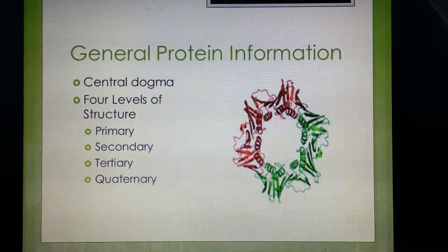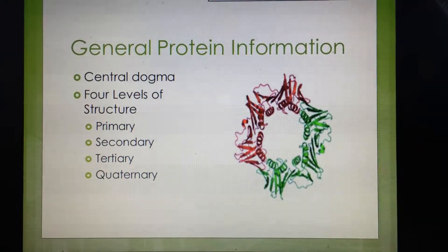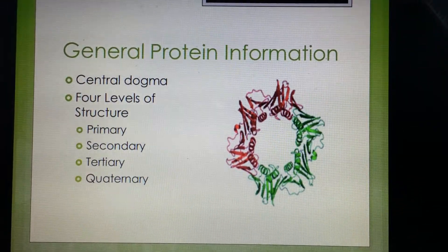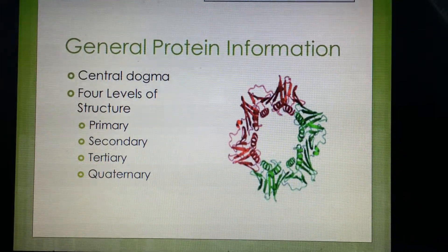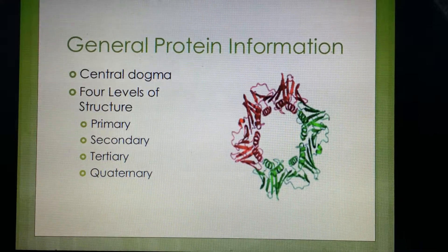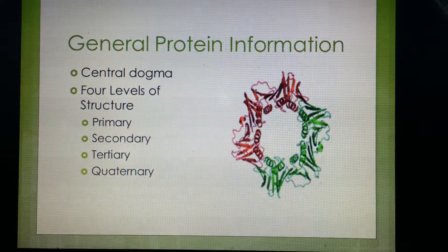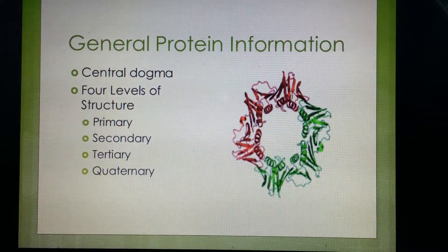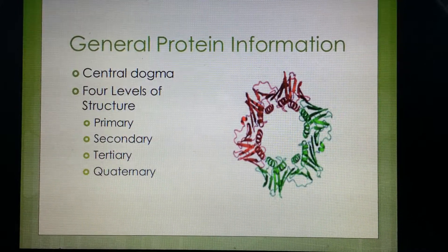Proteins contain four different levels of structure. Their primary level of structure is their amino acid sequence. With this amino acid sequence, the amino acids could be non-polar, polar, charged, uncharged, and so on. The secondary level of structure represents the alpha helices and the beta sheets.